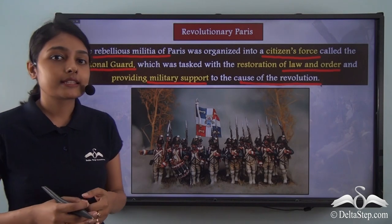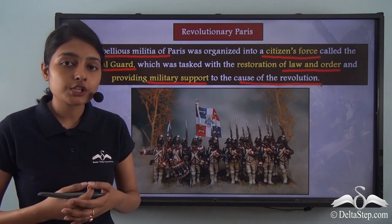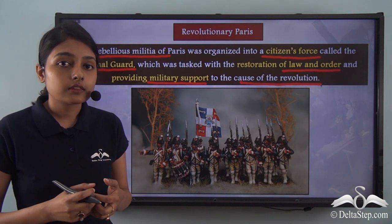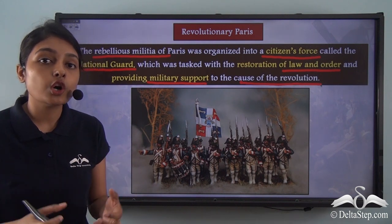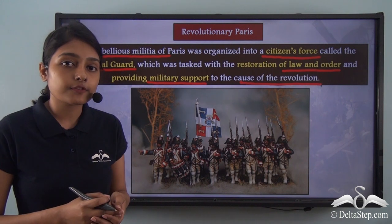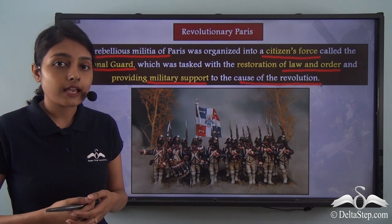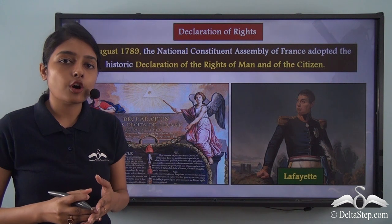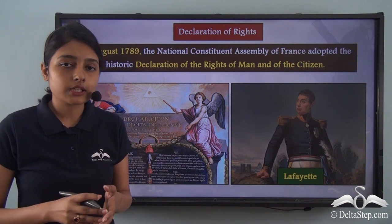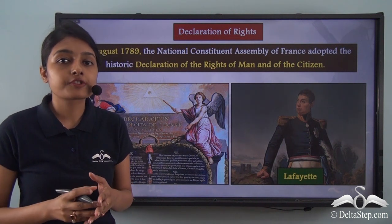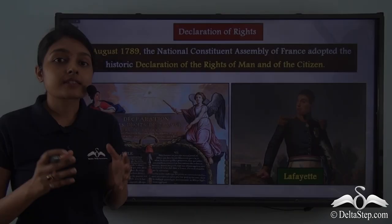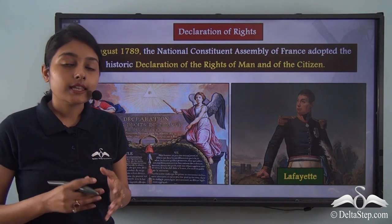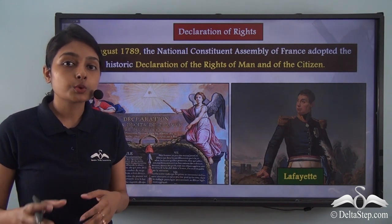The formation of this National Guard laid the foundation for a revolutionary army. In this way, the revolutionaries were trying to organize themselves so that they could successfully overthrow the French monarch, King Louis XVI. After the formation of the Paris Commune and the National Guard, the revolutionaries also required political guidance and a formal legislative body that would give proper shape to the revolution.